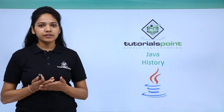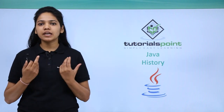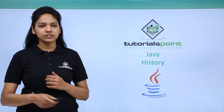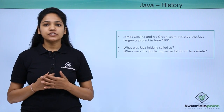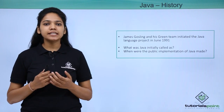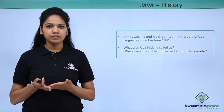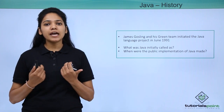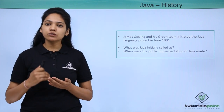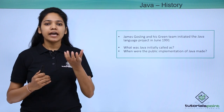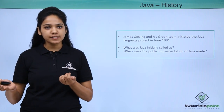Let us learn about Java history — why, where, and how it was initiated. Java was developed by James Gosling and his green team in the year 1991. It was named Oak (O-A-K), and the reason it was named Oak is that an oak tree stood outside the Gosling office.